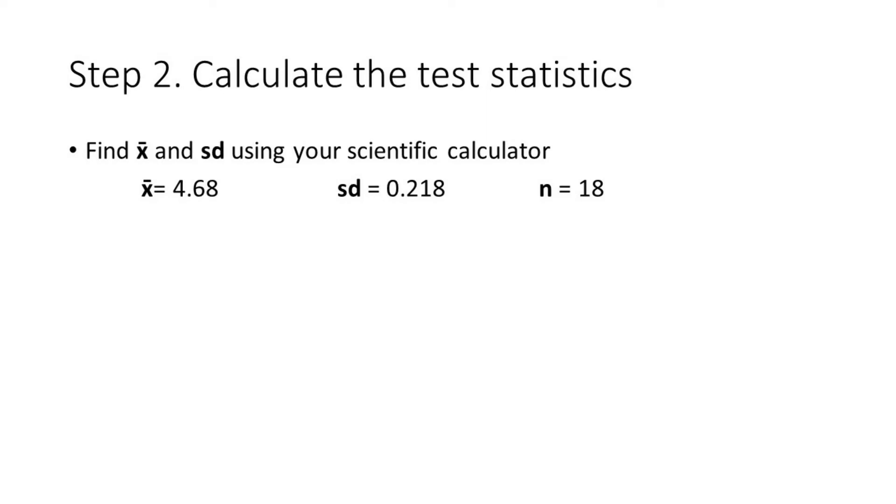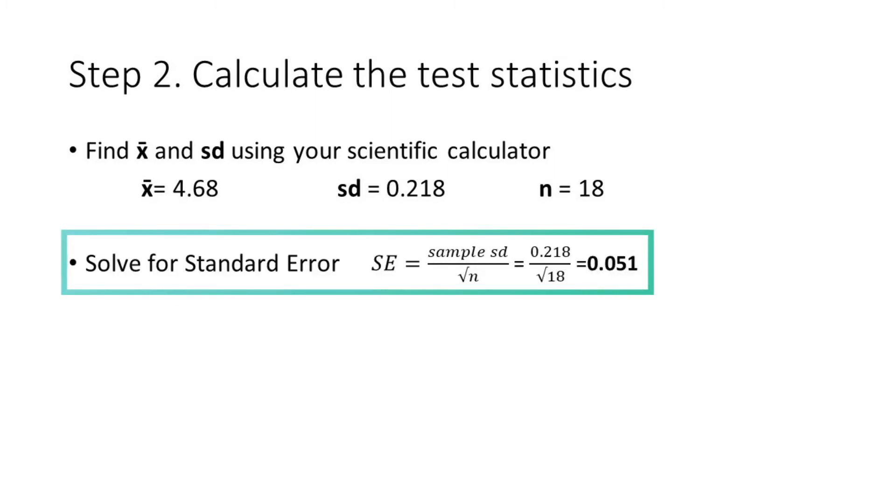The second step is to find the sample mean and standard deviation using your scientific calculator. In this case, the sample mean is 4.68 and the standard deviation is 0.218. Now we're ready to compute the standard error by dividing the standard deviation by the square root of n which gives us a standard error value of 0.051.